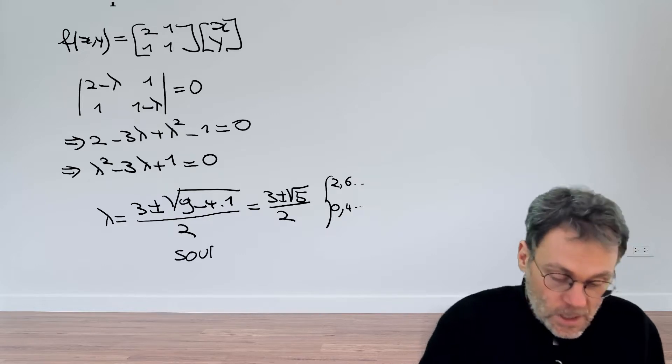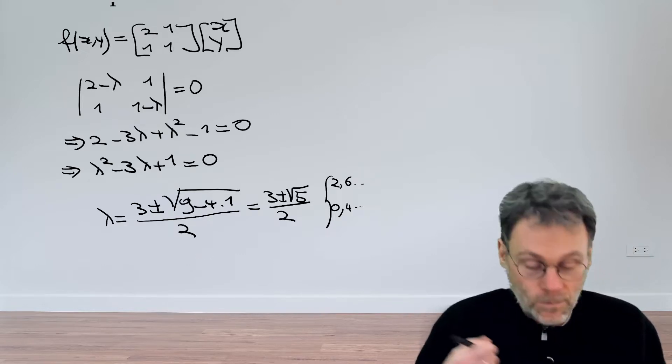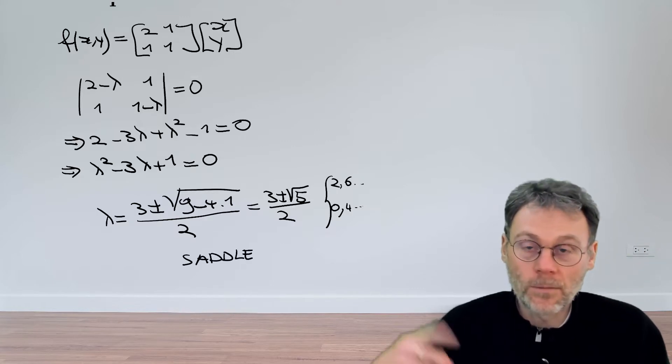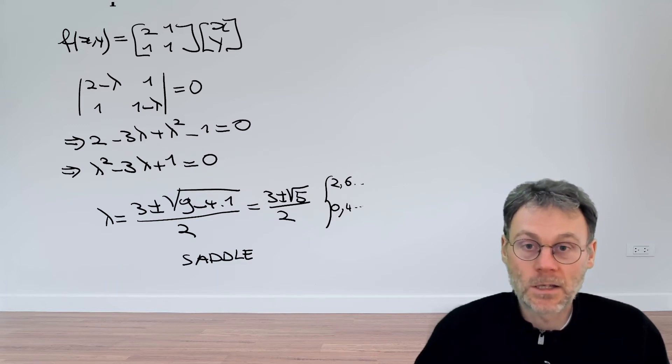Since one of the eigenvalues is bigger than 1 and one is smaller than 1, this is a saddle point. Okay, now on to the next part of this exercise.